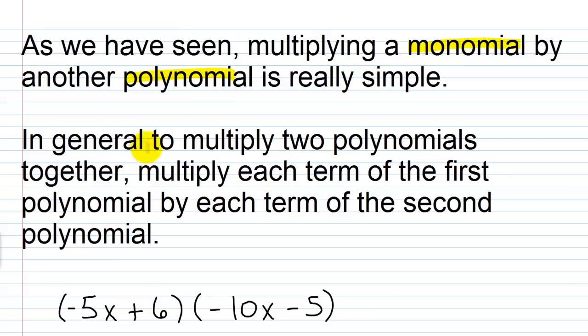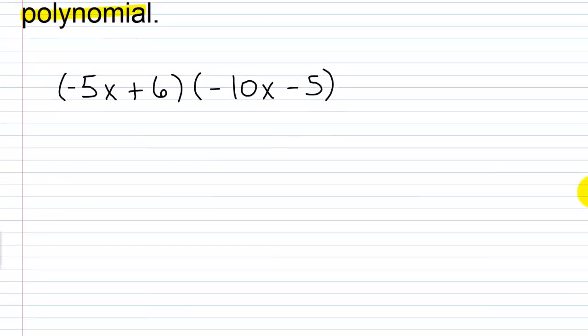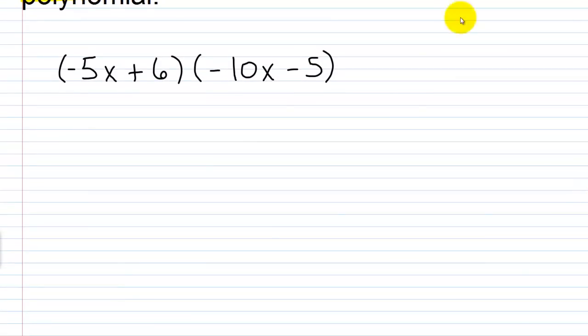So in general, to multiply two polynomials together, we multiply each term of the first polynomial by each term of the second polynomial. It's going to get a little bit more complicated here, but you kind of have to focus. This becomes second nature for you.